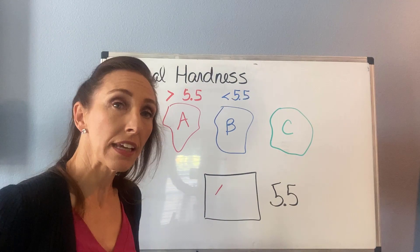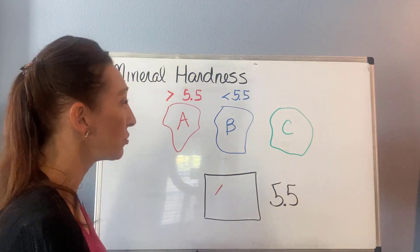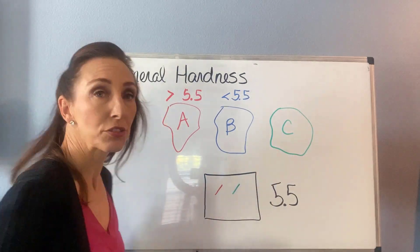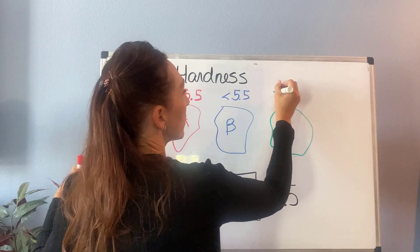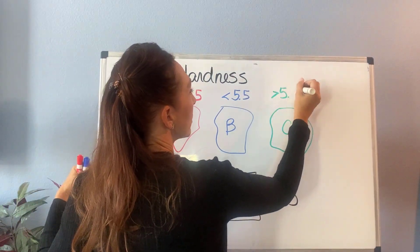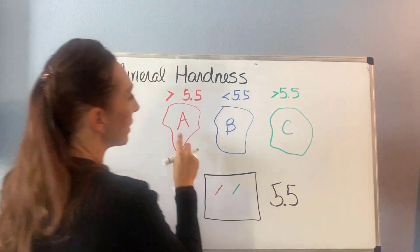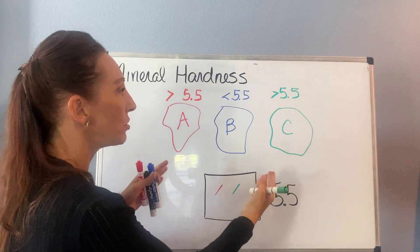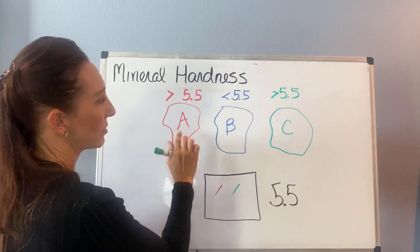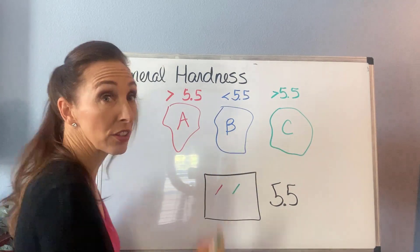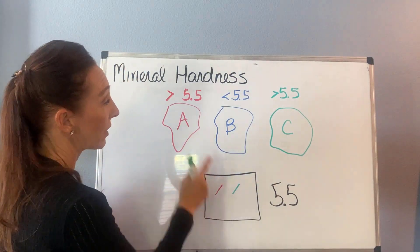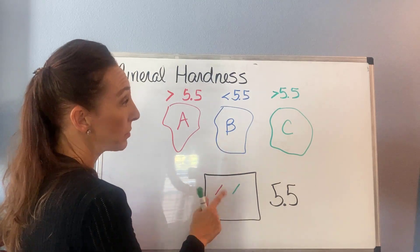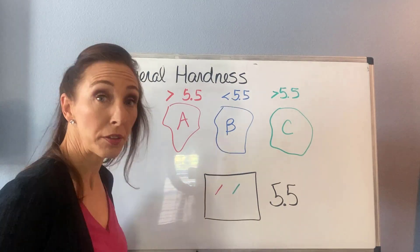Then we take sample C and try to scratch the glass — let's say it scratches the glass as well. So we know C is greater than 5.5. So A and C are the hardest, and B is the softest. Now if we wanted to, we could also use the glass to try to scratch the items. The glass would not scratch A or C, but it would scratch B because it's harder than B.